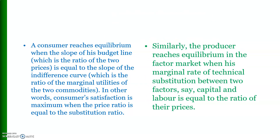The producer reaches equilibrium in the input market when his marginal rate of technical substitution between two inputs — say labor and capital — is equal to the ratio of the prices of capital and labor.